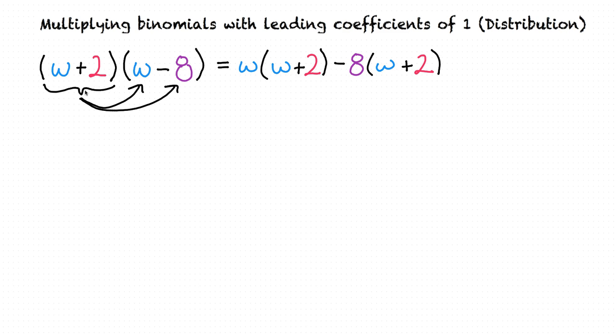Here, I've multiplied w plus two times w, and I've multiplied w plus two times minus eight. Our next step to simplify this further is to distribute this w to each term inside of this parentheses, and this minus eight to each term inside of this parentheses.